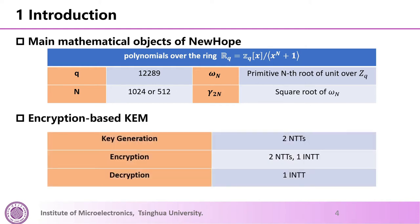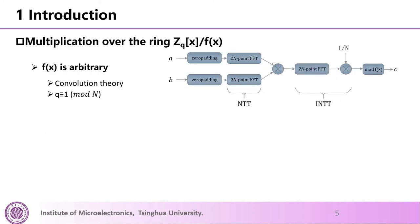NewHope is an encryption-based KEM. There are three main functions: key-generation, encryption, and decryption. Each function consists of several NTT and INTT operations. When the modular polynomial is arbitrary, the multiplication can be evaluated with convolution theory, and the size of NTT and INTT are doubled. After INTT, a reduction with the modular polynomial is required.